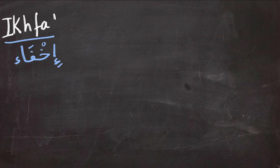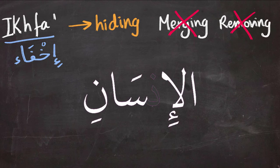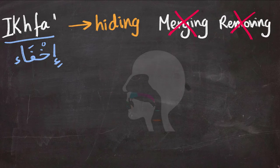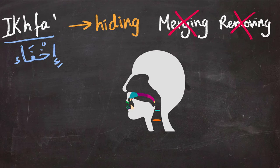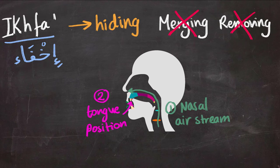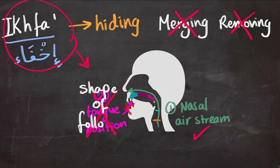Ikhfa means hiding — remember, hiding, not merging or removing. The Nun will be eclipsed or colored by the sound that follows it. To pronounce a proper Nun, you need to: first, let air through your nose; and second, press the tip of your tongue against the alveolar ridge or upper front teeth. To perform ikhfa, keep the first step but remove the second, replacing it with the mouth shape for the following sound. This whole process should take two harakat.